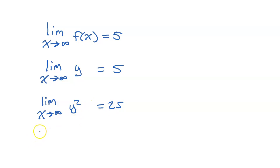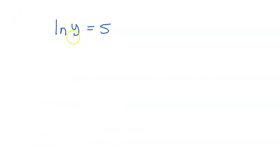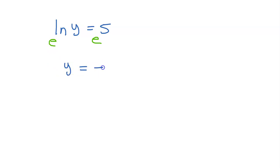Or if I wanted to add something to both sides, then I would have the limit as x approaches infinity of y squared plus 7 is equal to 32. Next, I need to remind you about how logarithms work. If I had the natural log of y is equal to 5, and I wanted to get y by itself, I could put a base e on both sides — it's called exponentiating both sides. Natural log and base e are inverse functions, so these cancel each other out, and I would end up with y is equal to e to the fifth power.